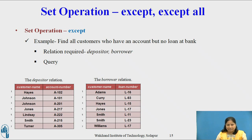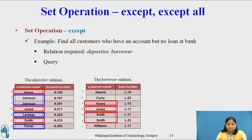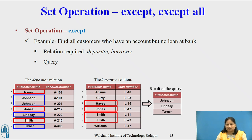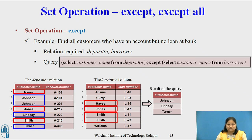Example of the Except operator: Find all customers who have an account but no loan at the bank. We consider tuples from the Depositor relation that are not in the Borrower relation. In the Depositor relation, two rows for Johnson, Lindsay and Turner shown in the blue box are in Depositor but not in Borrower. Customer names Hayes, Jones and Smith shown in the red box are common to both relations and will not be in the result. Hence the result contains three customer names: Johnson, Lindsay and Turner. Even if the Depositor relation contains two tuples for Johnson, because of the Except operator the result contains only one tuple for Johnson. The query is: SELECT CUSTOMER_NAME FROM DEPOSITOR EXCEPT SELECT CUSTOMER_NAME FROM BORROWER.